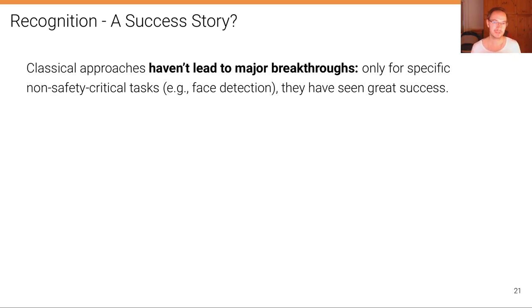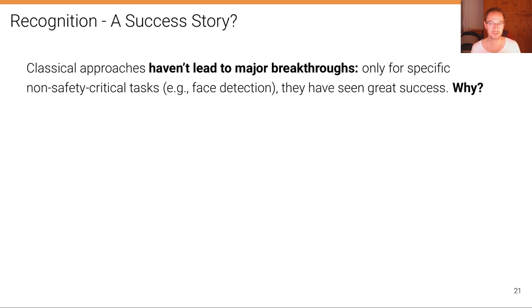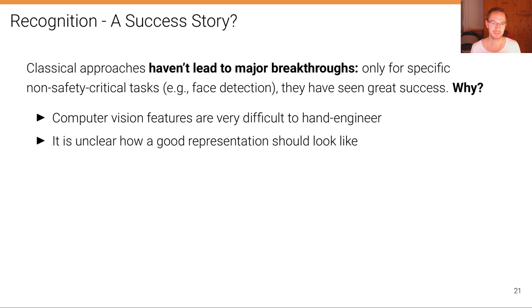Classical approaches, as we have seen in the previous unit, haven't led to major breakthroughs in object recognition. Only for specific non-safety-critical tasks such as face detection on a camera have they seen great success in terms of applications. The first and most difficult problem is that computer vision features are very difficult to hand-engineer. We humans just don't know what a good feature should look like, and it's unclear how a good representation should look.